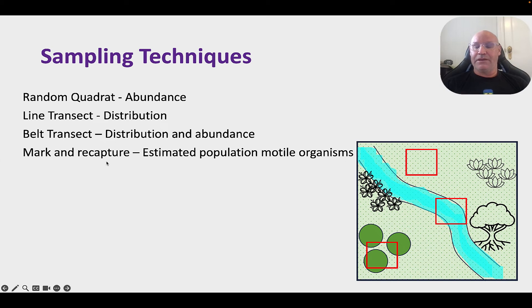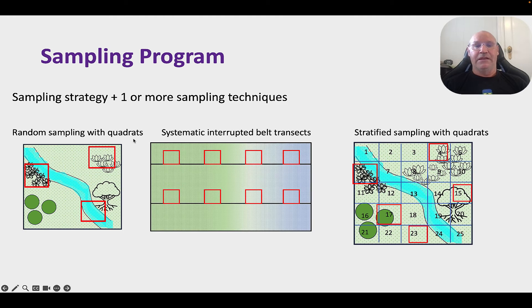Now, another technique is called the mark and recapture. This is what we use for motile organisms. Motile means moving. So, we'll have a look at that one in just a second. So, your overall sampling strategy is going to depend on your ecosystem and it's going to depend on the purpose of your sampling program. But, you can use your sampling strategy can use one or more sampling techniques. So, like for example, we might do random sampling with quadrats. We might do systematic interrupted belt transects. So, this is systematic sampling, and we use belt transects. Note that I've got two transect lines here. The more data, the better. Now, with stratified sampling, again, we might use quadrats, but we're placing them differently according to our sampling fraction.